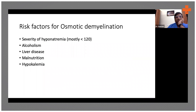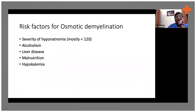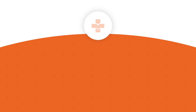Those more prone to osmotic demyelination include alcoholics, people with chronic liver disease, malnutrition, and those with the lowest sodium levels — the lower the sodium, the more likely they are to develop osmotic demyelination.